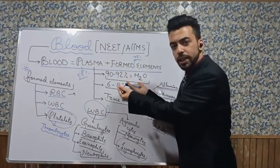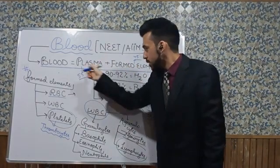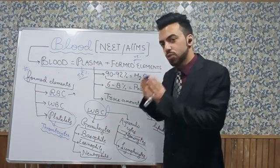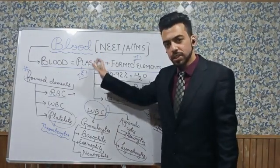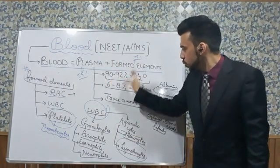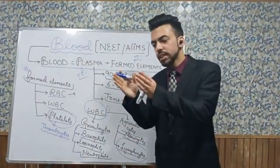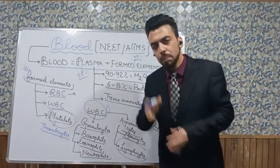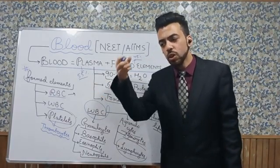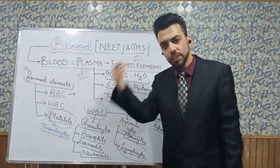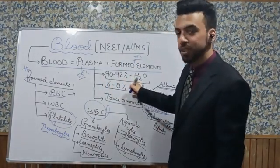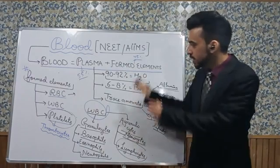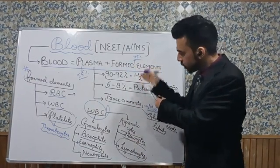This plasma is straw colored, viscous, and transparent. Plasma basically comprises 90 to 92% water — this is a universal fact. If you look at any living cell, you will observe that the majority portion is comprised by water. So 90 to 92% of plasma is water alone. What about the remaining portion?